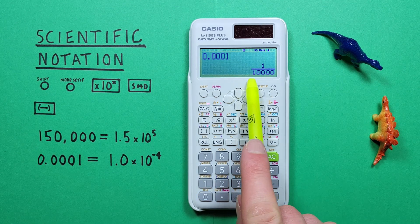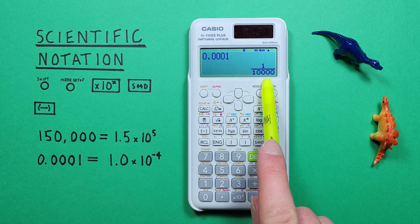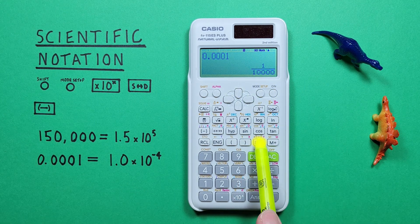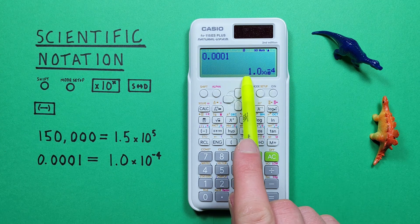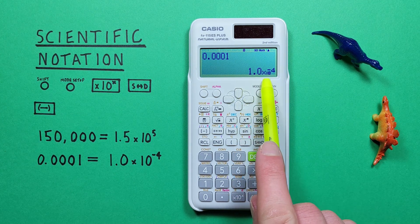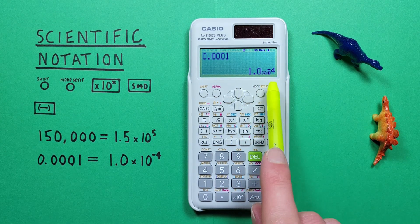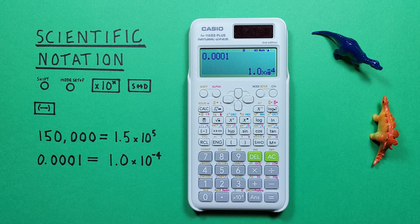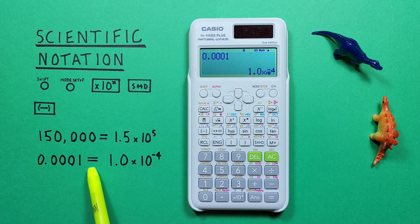And we see we get a fraction, which this calculator likes to do. But if we use the conversion key, we see we get the result as 1.0 times 10 to the power of negative 4. Which is the same value in scientific notation.